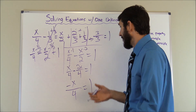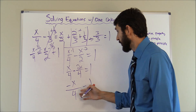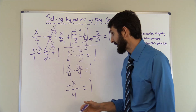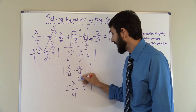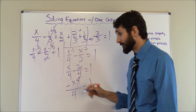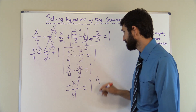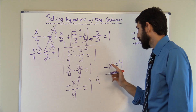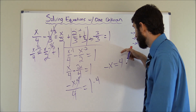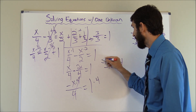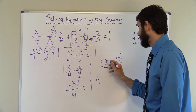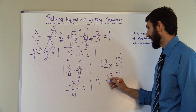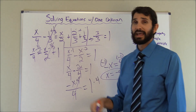We use the multiplication principle to isolate X. Since it's dividing by four, we multiply both sides by four — that cancels the denominator on the left, and gives us negative X equals four on the right. Whenever you finish an equation, you usually want the variable to be positive. So multiply both sides by negative one: negative times negative X gives positive X, and negative one times four gives negative four. So X equals negative four.